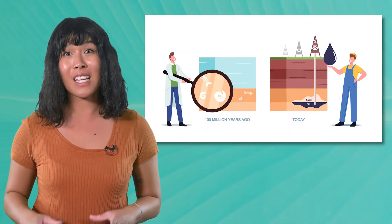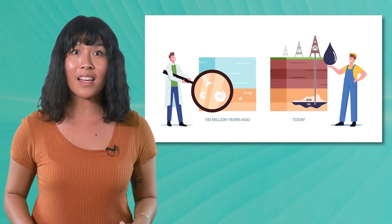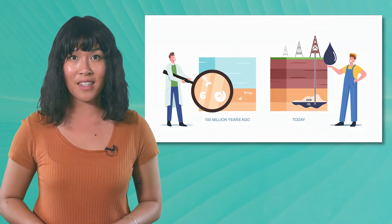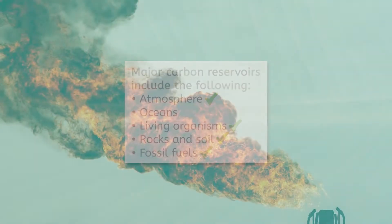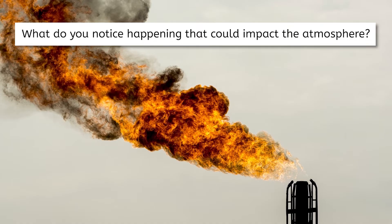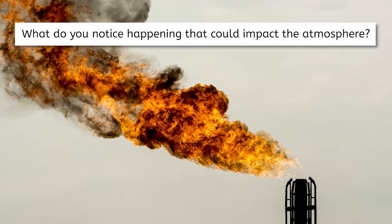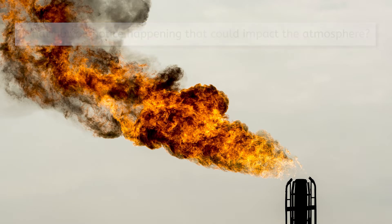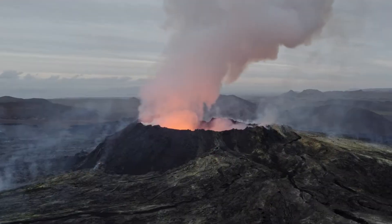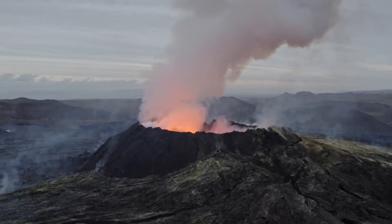Humans mine or drill to access these fuels for transportation, heating, and electricity production. Carbon can cycle from the geosphere back to the atmosphere through a process called combustion. Combustion is simply burning something like fossil fuels. As fossil fuels are burned to create electricity, some carbon dioxide gas is released back into the atmosphere. This process also happens naturally when volcanoes erupt.